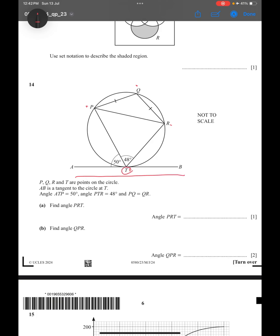Angle ATP is 50 degrees, so this is 50 degrees. Angle PTR is 48 degrees. And PQ equals QR, they have given PQ equals QR. Find the angle PRT.